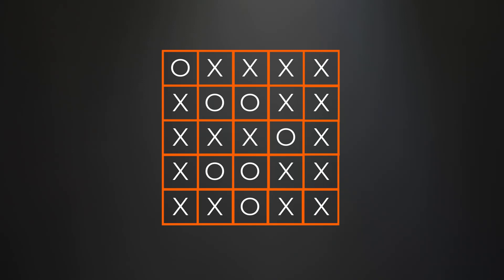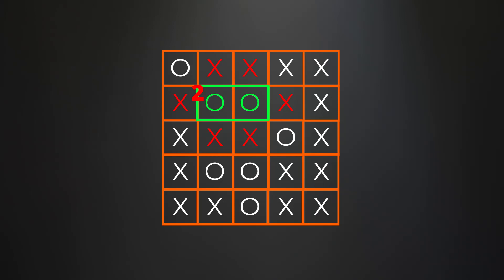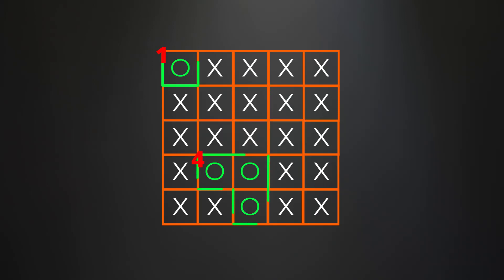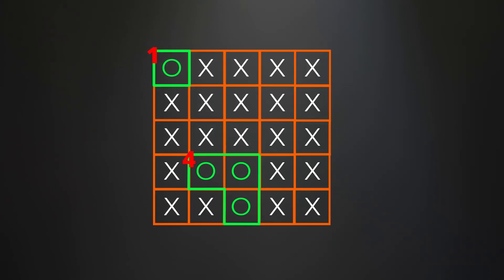Looking at the example, we have four different groups of O's connected horizontally or vertically. After running our algorithm, some groups would be flipped because they are fully surrounded by X's. The other two groups would be left alone — notice what they have in common: both are touching the border of the matrix.